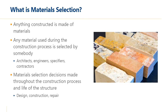Before we begin with the case studies, we want to make sure everyone's on the same page with what we're talking about. Material selection is one of the key parameters we'll be discussing today. Everything that's constructed is made of materials, and any material used in the construction process is going to be selected by somebody — whether that's an architect, an engineer, a specifier, or a contractor. The decisions about which materials are selected are made throughout the construction process and over the entire life of the structure. They can occur during the design phase, the construction phase, or the repair phase — and if they happen during construction or repair, they're sometimes called material substitutions.